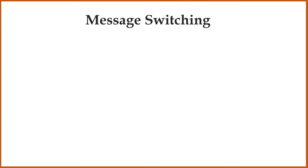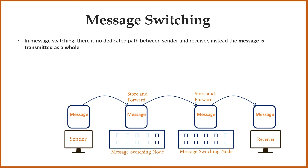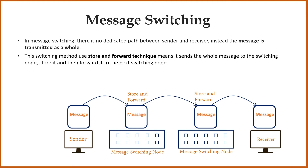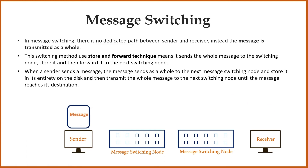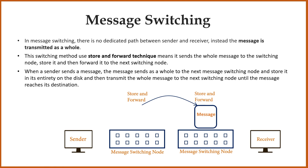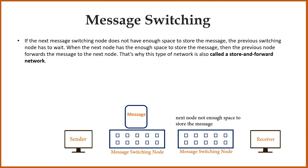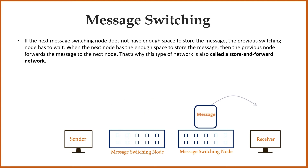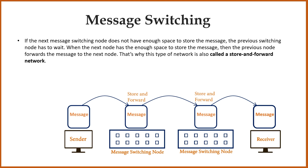Now let's discuss message switching. In message switching, there is no dedicated path between sender and receiver; instead, the message is transmitted as a whole. This switching method uses a store-and-forward technique, meaning it sends the whole message to a switching node, stores it, and then forwards it to the next switching node. When a sender sends a message, the message is sent as a whole to the next message switching node, stored in its entirety on the disk, and then transmitted to the next switching node until the message reaches its destination. If the next switching node does not have enough space to store the message, the previous node has to wait until it has enough space, then it forwards the message. That's why this type of network is also called a store-and-forward network.